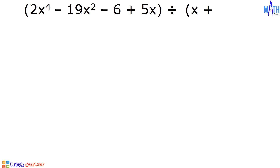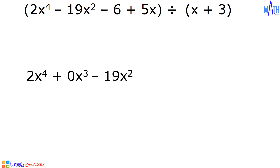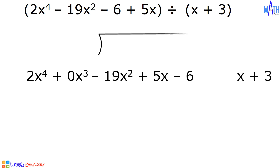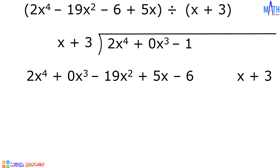Next example: 2x raised to 4 minus 19x squared minus 6 plus 5x divided by x plus 3. In standard form, the dividend is 2x raised to 4. Since there is no x cubed, we will write plus 0x cubed minus 19x squared plus 5x minus 6. Let us write x plus 3 outside this symbol and inside is the dividend, 2x raised to 4 plus 0x cubed minus 19x squared plus 5x minus 6.